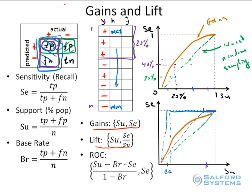What is sensitivity divided by support? Going back to the example of targeting 20% of the population and capturing 40% of the group of interest, lift becomes 40% divided by 20%, which gives 2.0. In other words, lift is the ratio of the sensitivity at a point on the gains curve divided by the sensitivity you would get from random sampling — a factor of how much better your model is doing.